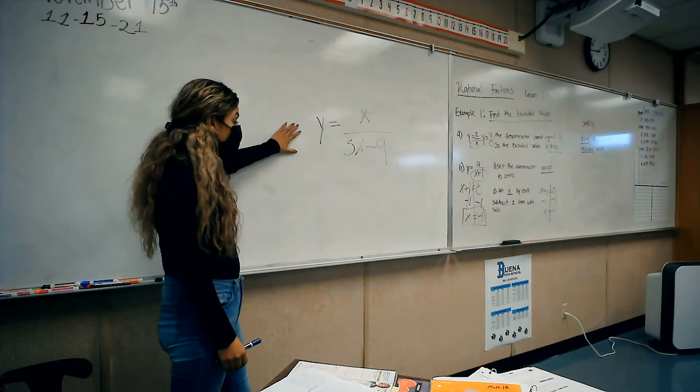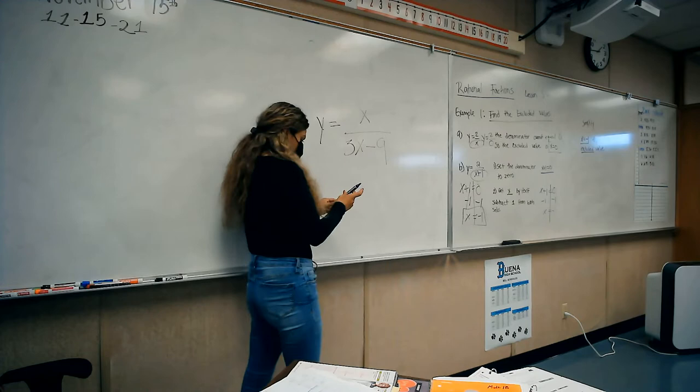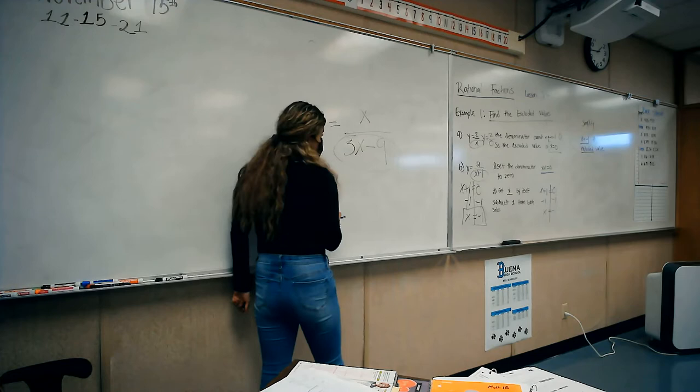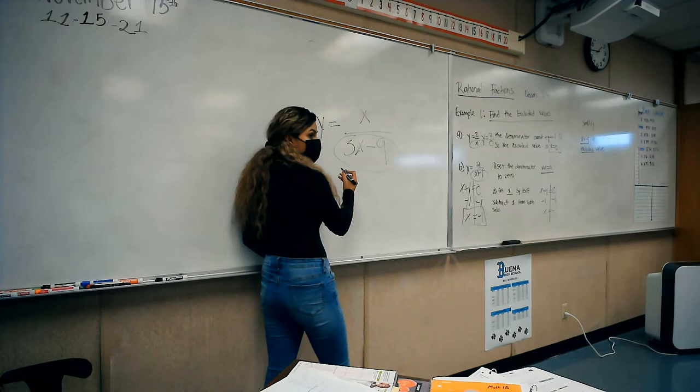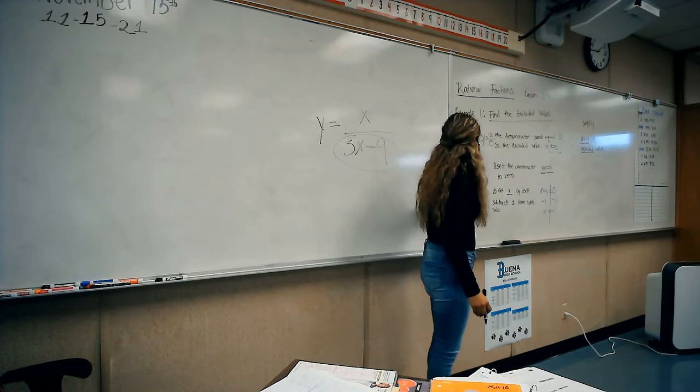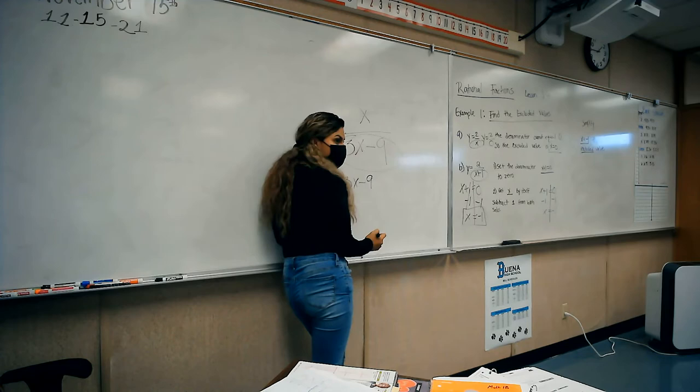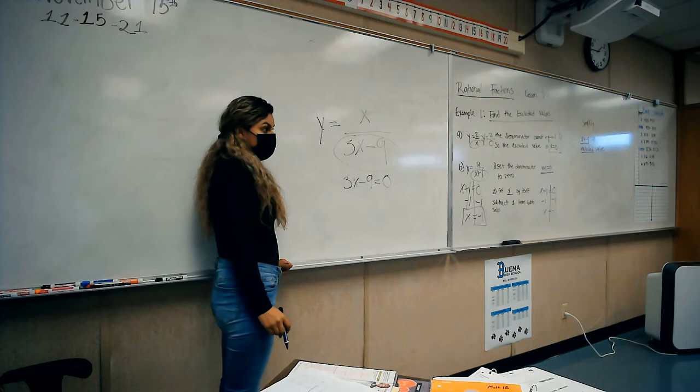All right. Y equals x over 3x minus 9. Again, we need to set the denominator to 0. How do we do that? We're focusing on the denominator. Which one are we focusing on? The top or the bottom? The bottom. So how do I set that to 0? 3x minus 9 equals 0. We just set it up to 0.